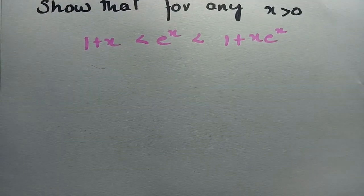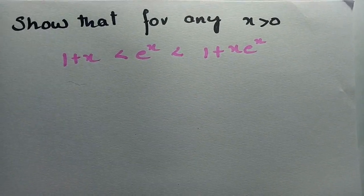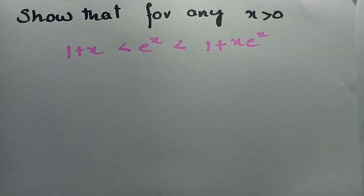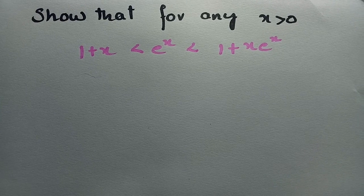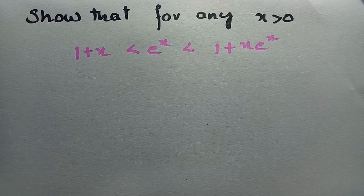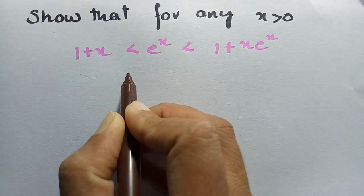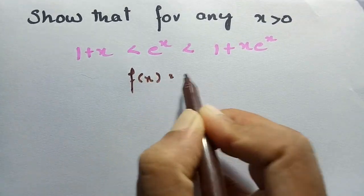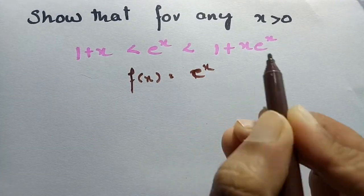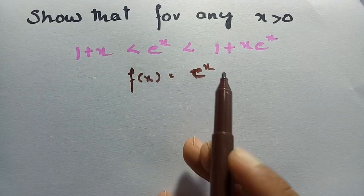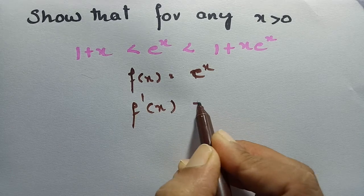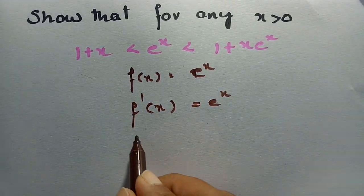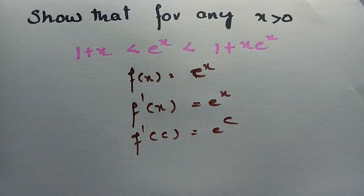There is another inequality we have to show for x positive: 1 + x < eˣ < (1 + x)eˣ. This is also to be shown using Lagrange's mean value theorem. For that, let f(x) = eˣ. Then f'(x) = eˣ and f'(c) = eᶜ.